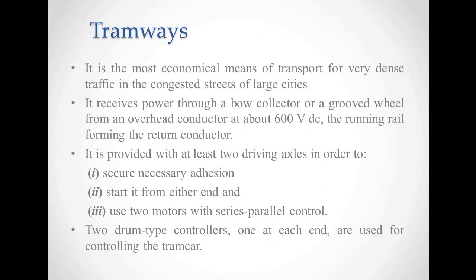Now we will discuss two types of AC locomotives: tramways and trolley buses. Tramways is the most economical means of transport in very dense traffic in congested streets of large cities. It receives power through a bow collector or a groove wheel from an overhead conductor at about 600 volt DC. The running rail forms the return conductor, giving the return path to the DC. It is provided with at least two driving axles to secure necessary adhesion between the wheel and the track, and to start it from either end. It uses two motors with series-parallel control.